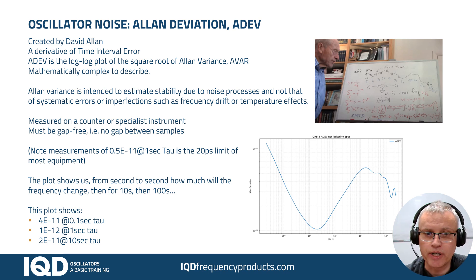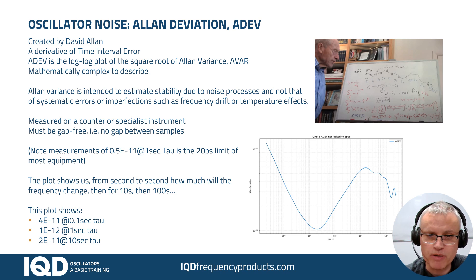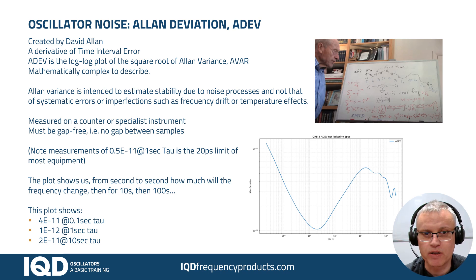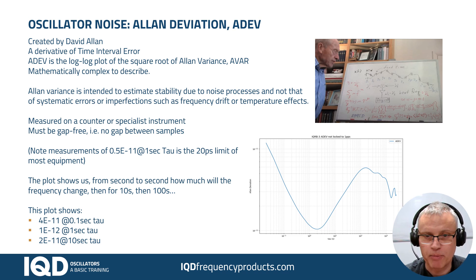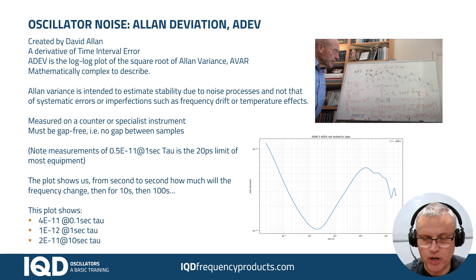To make the measurement you're going to need a specialised instrument or a counter. The measurement has to be made on a gap-free instrument, so it can't be done on a traditional counter — if you have a gate time of 0.1 of a second, there could be a small gap between those two measurement periods, and that was a problem for Allan Deviation. There was a way mathematically to compensate for that but it was very complex. Most modern counters are what we call gap-free, so they're interleaving over each other, which is much easier for an Allan Deviation calculation.